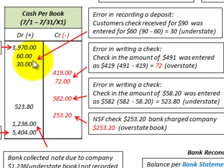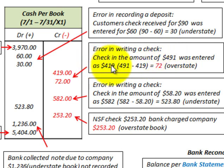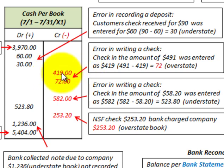Next, an error in writing a check: a check in the amount of $491 was entered for $419. The company wrote a check for $491 to pay for something, but recorded it as $419. Taking $491 less $419 gives $72, where the book amount was overstated. It should have been entered as $491 but was entered as $419, so we didn't reduce our cash enough — we credit and reduce our cash by $72.